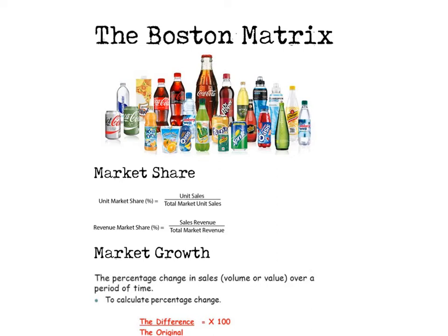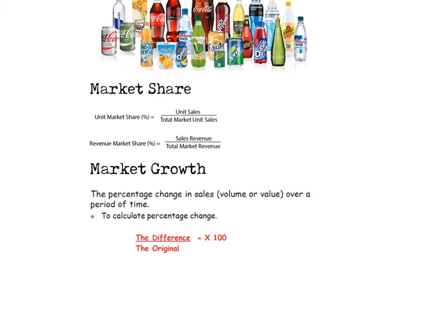They'll also look at the market growth. In terms of market growth, they have to consider the sales or the volume and how it changes over time, so they'll have to calculate a percentage change. They'll work out one year in comparison to another year, calculate the difference in sales, divide that by the original — as you would with any percentage change — and then multiply by 100. That'll give you an understanding of whether there's high or low market growth within that market.